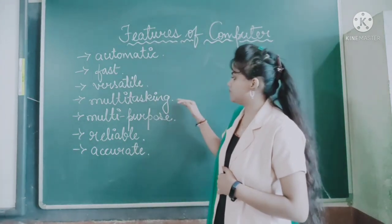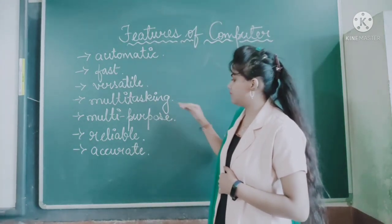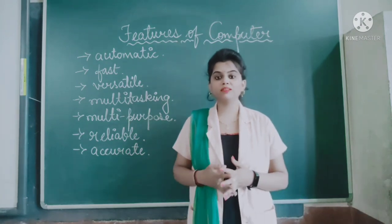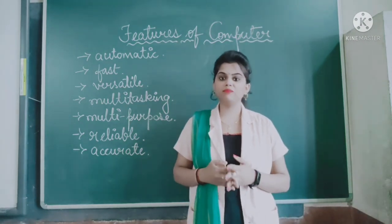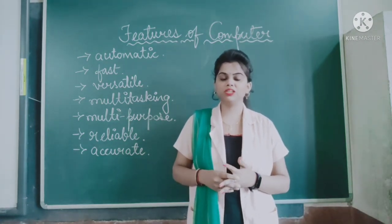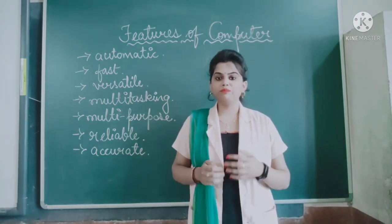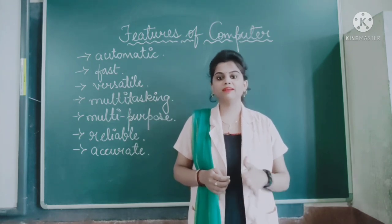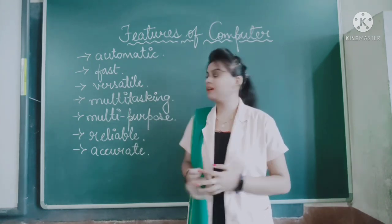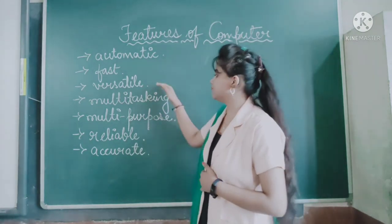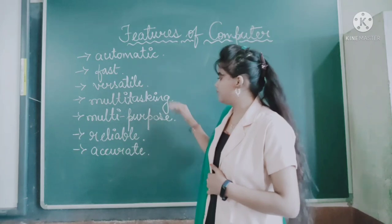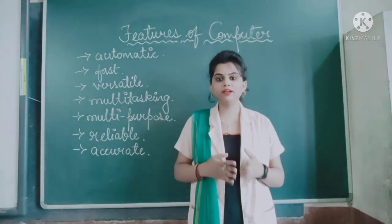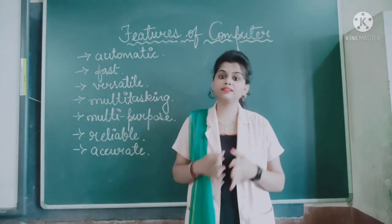Next is versatile — meaning multitasking and multipurpose. A computer is a multitasking and multipurpose machine. It can do different things at the same time. You can give it commands and it can perform different tasks simultaneously.